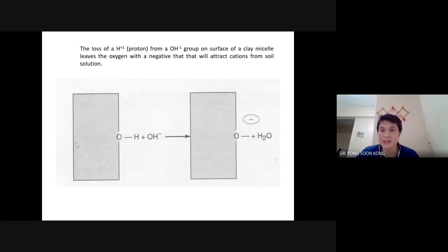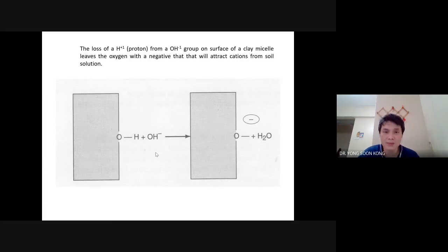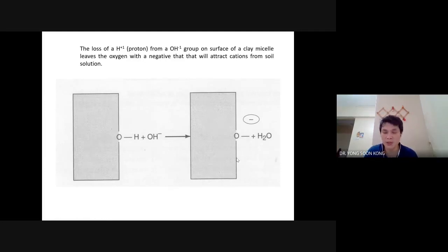Now, how does humus gain negative charge? As I told you, you increase the pH. This hydroxyl group reacts with a hydroxide from any alkaline material or alkaline solution, which essentially increases the pH. Neutralization happens, producing water. In the end, the surface of the colloid or clay micelle gains the negative charge. This is consistent with what I told you earlier — increasing pH converts neutral humus into negatively charged humus.